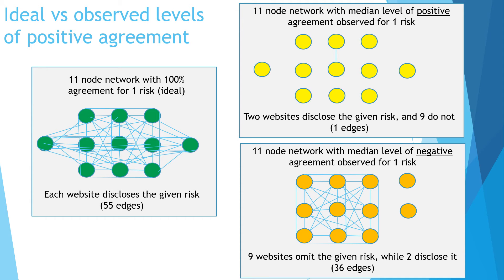To put this into perspective, we can compare the average network visually to an ideal network. On the left side, an 11-node network with 100% agreement for one risk is ideal — each website discloses a given risk for a total of 55 edges. In contrast, on the right hand side, we have an 11-node network with the median level of positive agreement observed for one risk, for a total of only one edge. On the flip side, the bottom figure shows the median level of negative agreement — nine websites omitted a given risk while two websites disclosed it, for a total of 36 edges within the network.